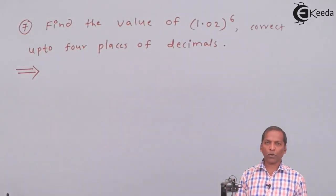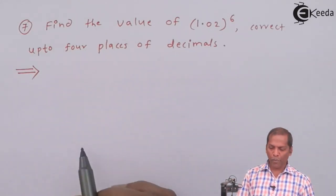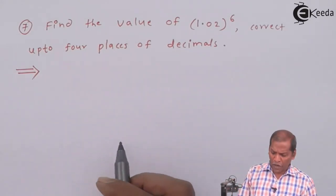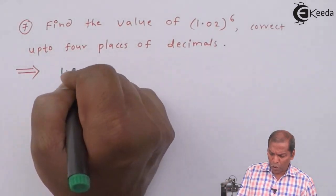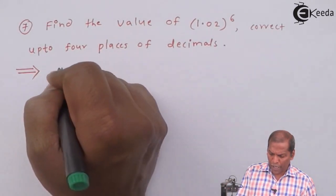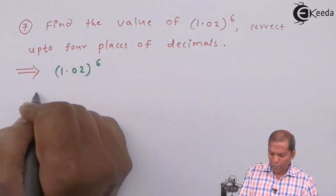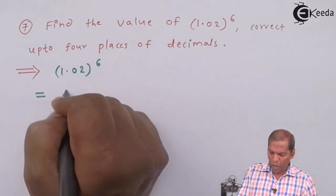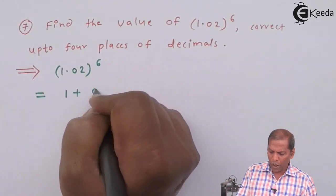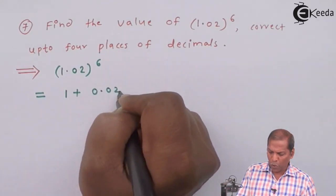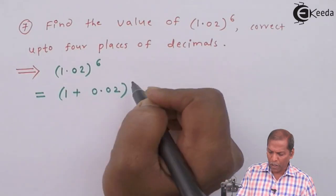Now let's see the solution. The solution is quite simple. First we start from (1.02)^6. So this can be written as (1 + 0.02)^6.